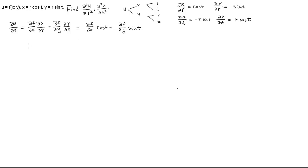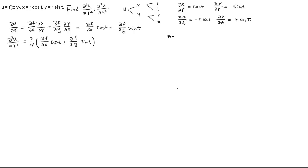Now look at the second-order derivative. We take ∂/∂r of the entire expression f_x·cos(t) + f_y·sin(t). We need to pay attention to f_x and f_y: because f is a function of x and y, these two derivatives are still functions of x and y, and x and y are themselves functions of r and t. So we must apply the chain rule again to each.